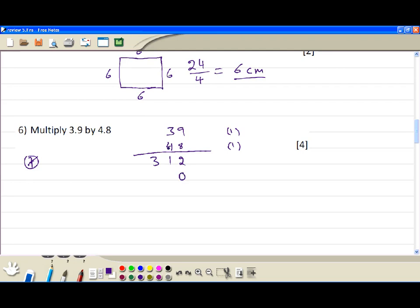Then you add 0 here. 4 times 9 is 36, then carry 3. 4 times 3 is 12 plus 3 is 15. We get 1872. Then we have to pay back 2 decimal places to the left. So therefore 3.9 times 4.8 equals 18.72.